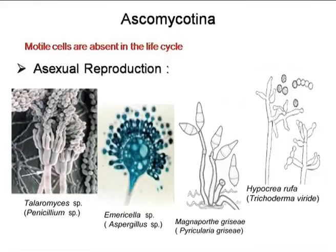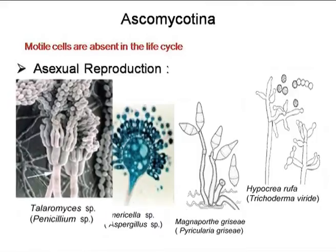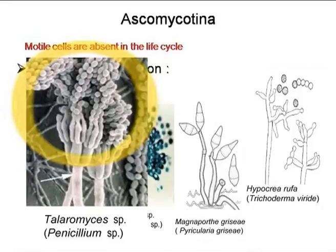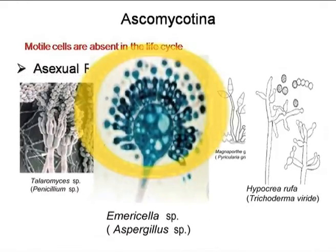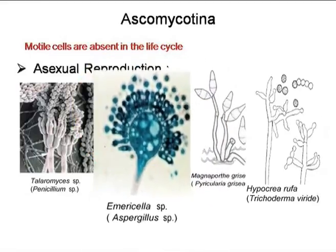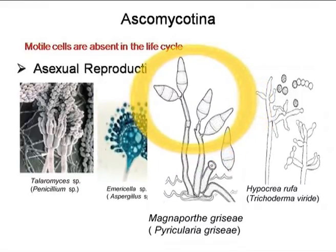Motile cells are totally absent in this group, but asexual reproduction takes place simply by means of non-motile aplanospores, which are produced on the stalk-like structure called conidiophore. This conidiophore bears a terminal small cell called conidiogenous cell, from which the conidia are cut off. You can see in the diagram how conidiospores are produced from the sterigmata of the conidiophore. In Aspergillus, large numbers of conidiophores are differentiated from the sterigmata or conidiogenous cells.